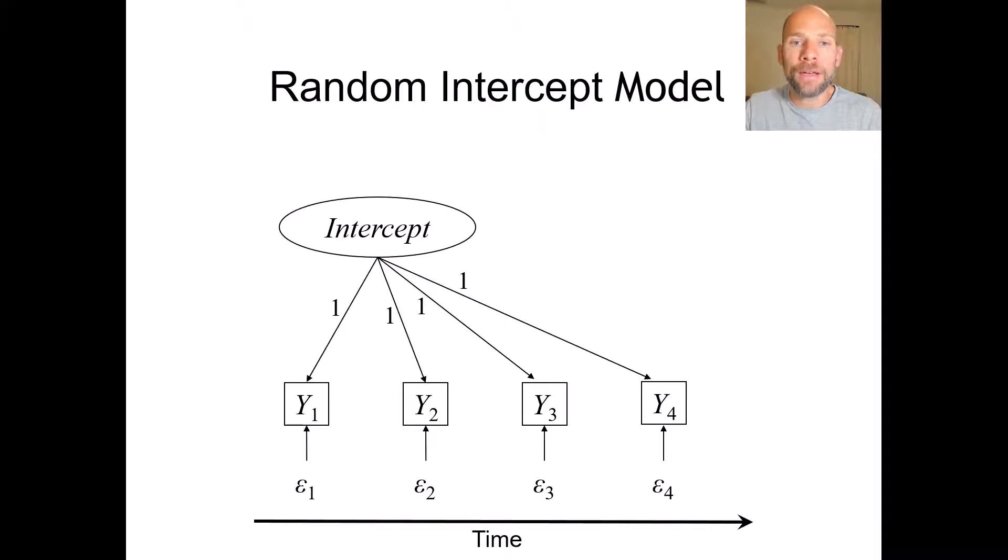Furthermore, we have error variables for which variances are estimated. So there is a distinction made in this model between true score variance which is represented by the intercept factor, so that would be the reliable variance that would indicate true differences between individuals in their scores.